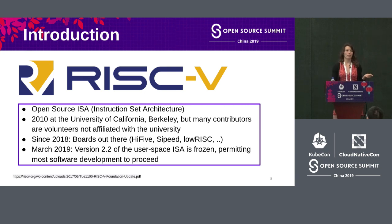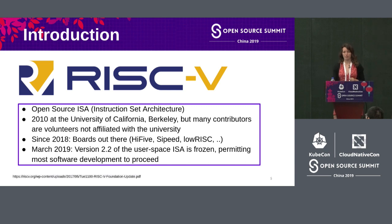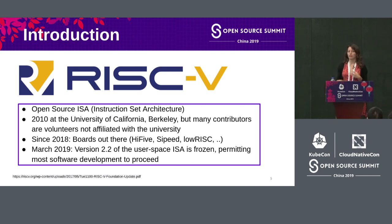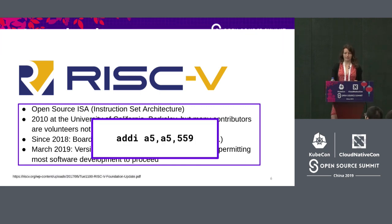To see how important this project is, look at which companies joined the RISC-V foundation — for example Google, NXP, NVIDIA, Qualcomm, and Samsung. The advantage of RISC-V is that it's released under a permissive open source license, which means anyone — you, me, or a university — can implement their own RISC-V architecture without needing to pay any royalties.